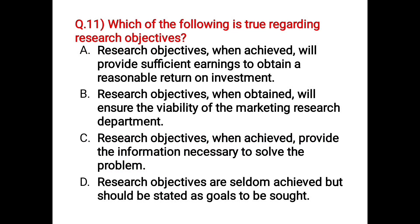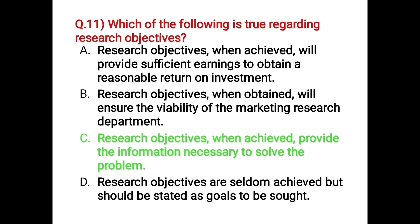Next question: which of the following is true regarding research objectives? Option A: research objectives when achieved will provide sufficient earnings to obtain a reasonable return on investment. Option B: research objectives when obtained will ensure the viability of the marketing research department. Option C: research objectives when achieved provide the information necessary to solve the problem. Option D: research objectives when achieved should be stated as goals to be sought. The correct answer is Option C — research objectives when achieved provide the information necessary to solve the problem.